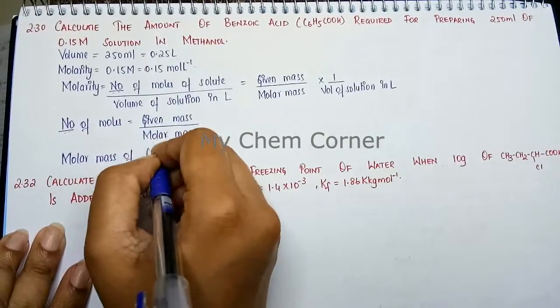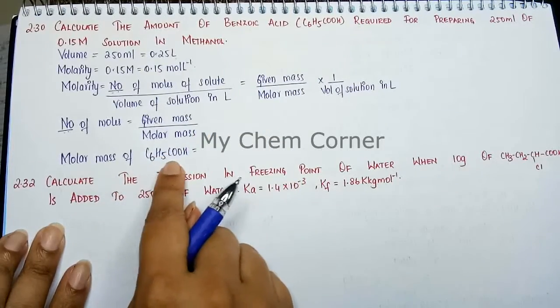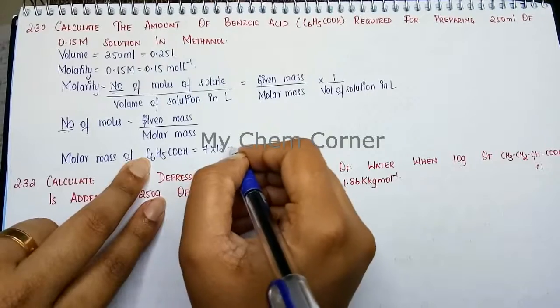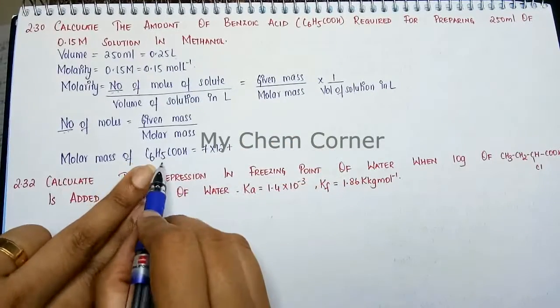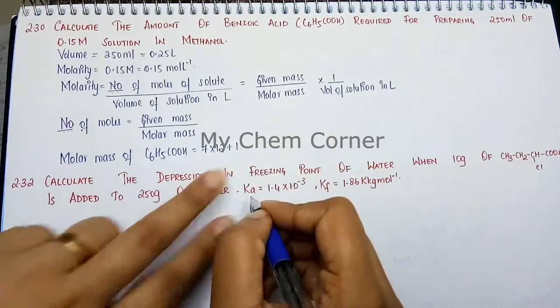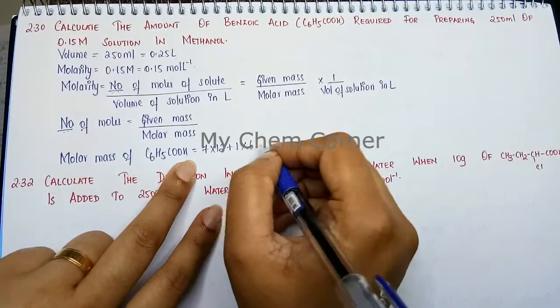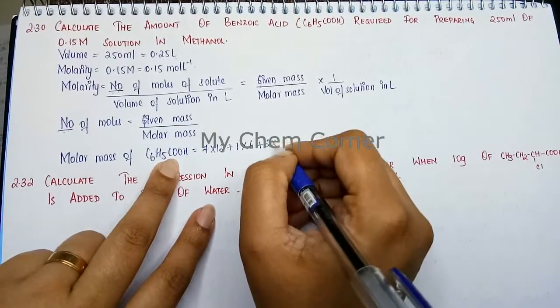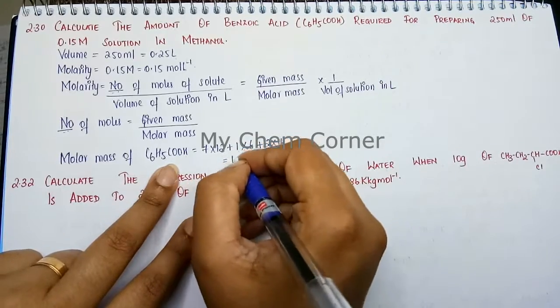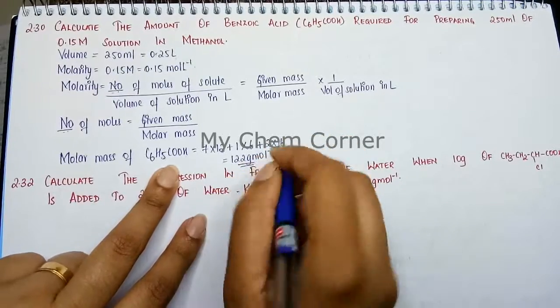Benzoic acid is C6H5COOH. We have 7 carbons, so 7 times 12. We have 6 hydrogens (5 plus 1), so 6 times 1. Plus 2 oxygens times 16. When we total this up, we get 122 grams per mole for the molar mass.